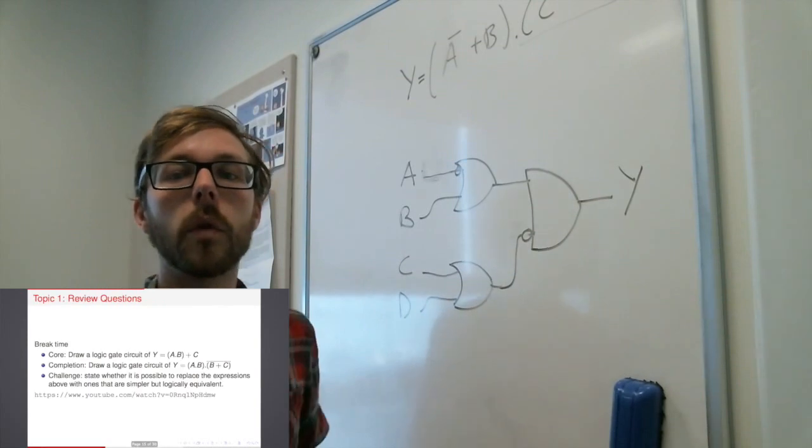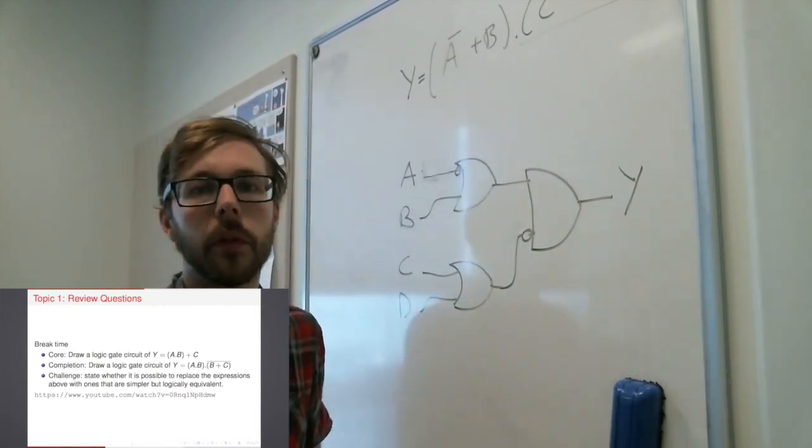we would try and simplify it logically first and then build the logic gate from that simplified expression. The simpler way of doing that is called carnal maps and that's the topic of the next half of this lecture.